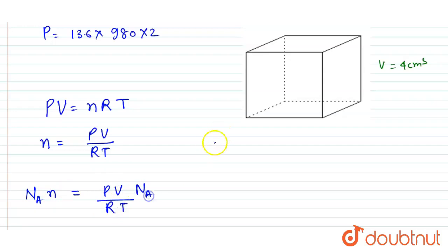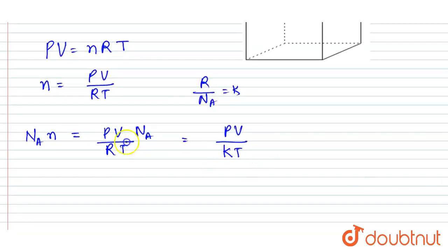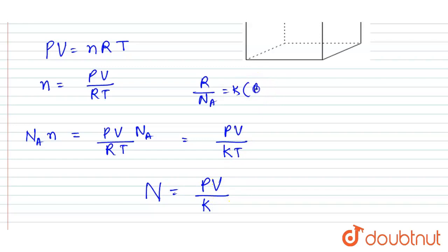Multiplying n by Nₐ and using the fact that R divided by Nₐ equals Boltzmann constant k, the number of molecules simplifies to PV divided by kT. So the expression for number of molecules is pressure times volume divided by Boltzmann constant times temperature.